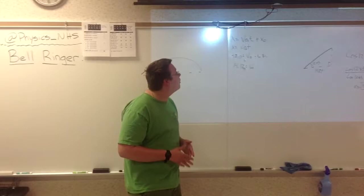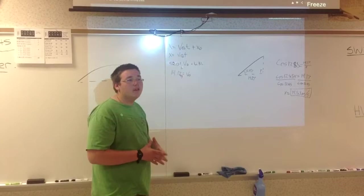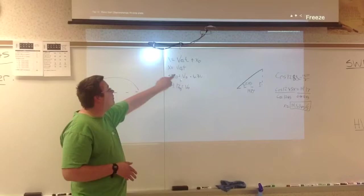So we can ignore that for now if we're looking at the initial velocity of this ball. And furthermore, we can take the x0 out because we can just assume that x0 was zero. So now we have x equals V0t, the initial velocity times time.